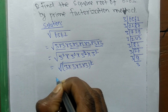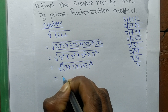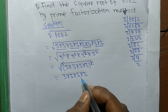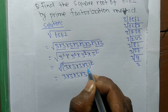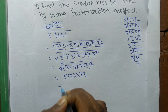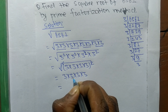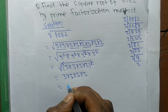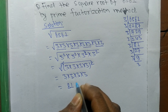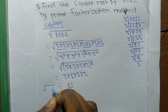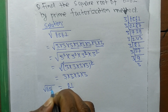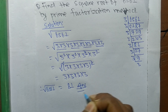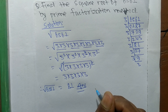Since square and square root cancel each other, the remaining numbers 3 times 3 times 3 times 3 come out of the square root. So 3 times 3 is 9, 9 times 3 is 27, and 27 times 3 is 81. Therefore, the square root of 6561 is 81.